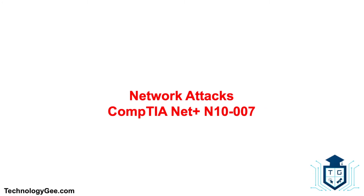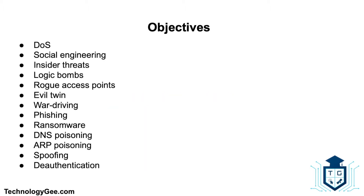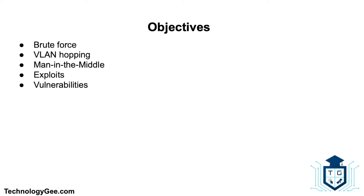What's up everybody, this is your boy Tech G back with another video to help you successfully pass the CompTIA Network Plus N10-007 certification. In this video you're going to learn about networking attacks such as denial of service, social engineering, insider threats, logic bombs, rogue access points, evil twins, war driving, phishing, ransomware, DNS poisoning, ARP poisoning, spoofing, de-authentication, brute force attacks, VLAN hopping, man in the middle, and exploits versus vulnerabilities.